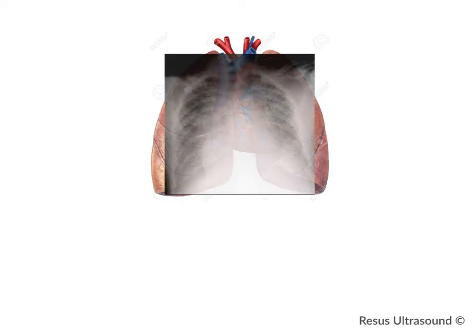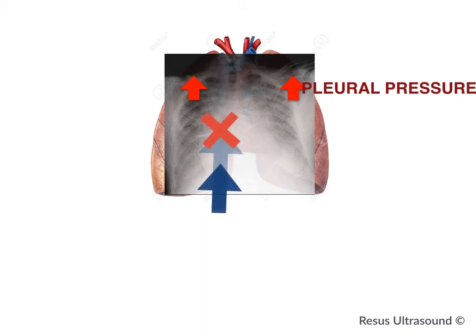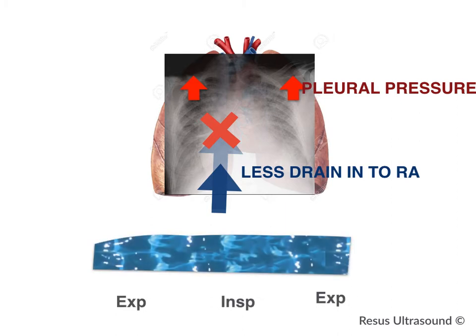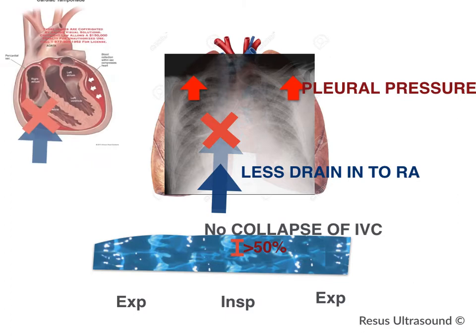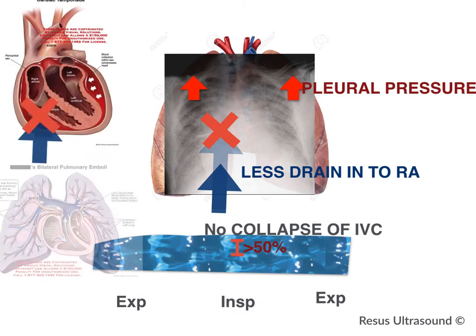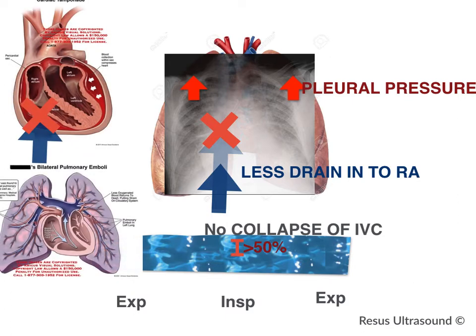But when you have increased right atrial pressure — like in heart failure or poor cardiac function — the back pressure goes up. The IVC cannot drain into the RA anymore, and then the diameter of the IVC is rigid, looking the same whether inspiration or expiration. This also happens in cardiac tamponade and pulmonary embolism.